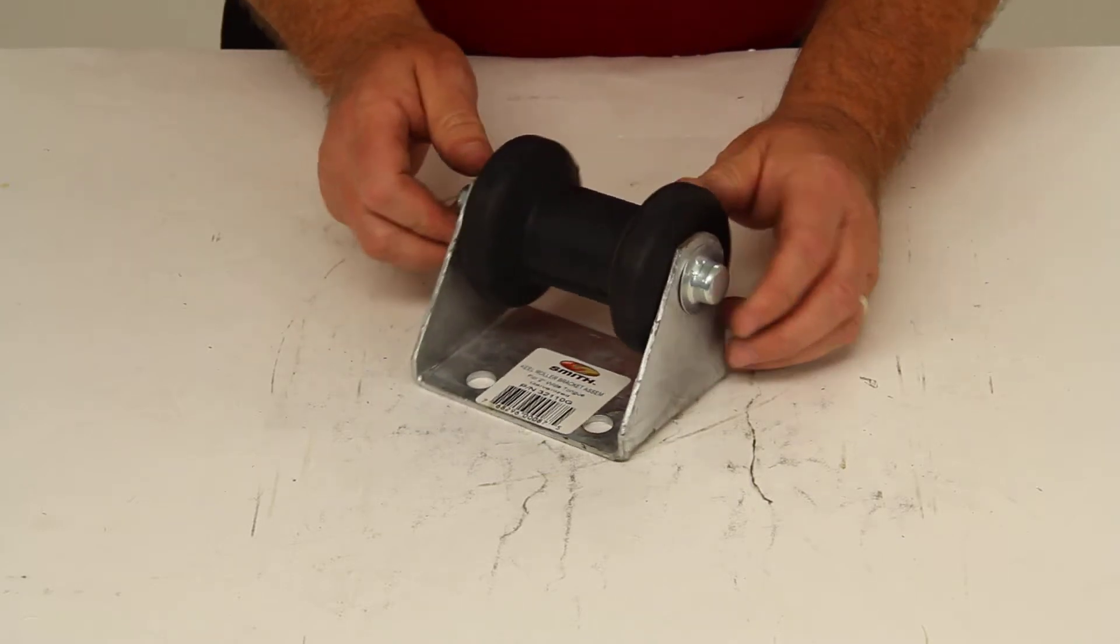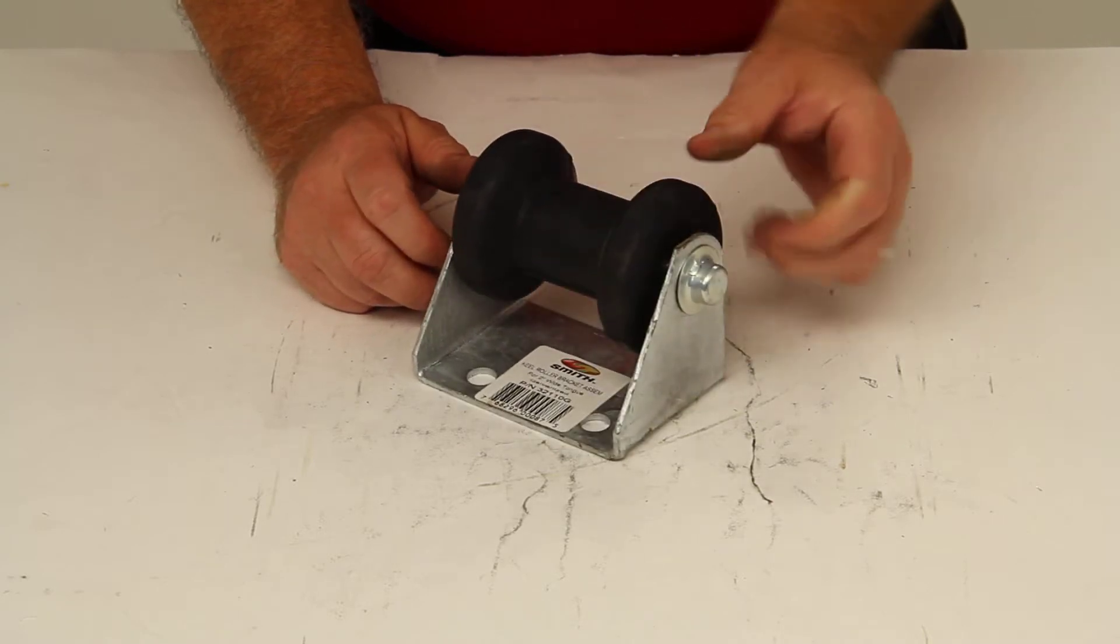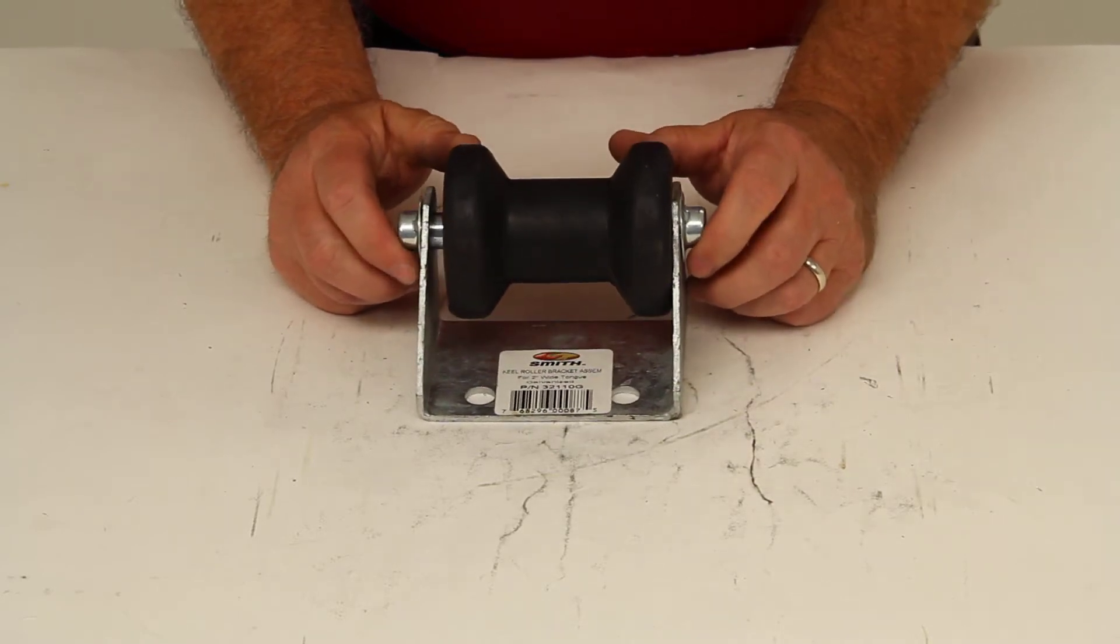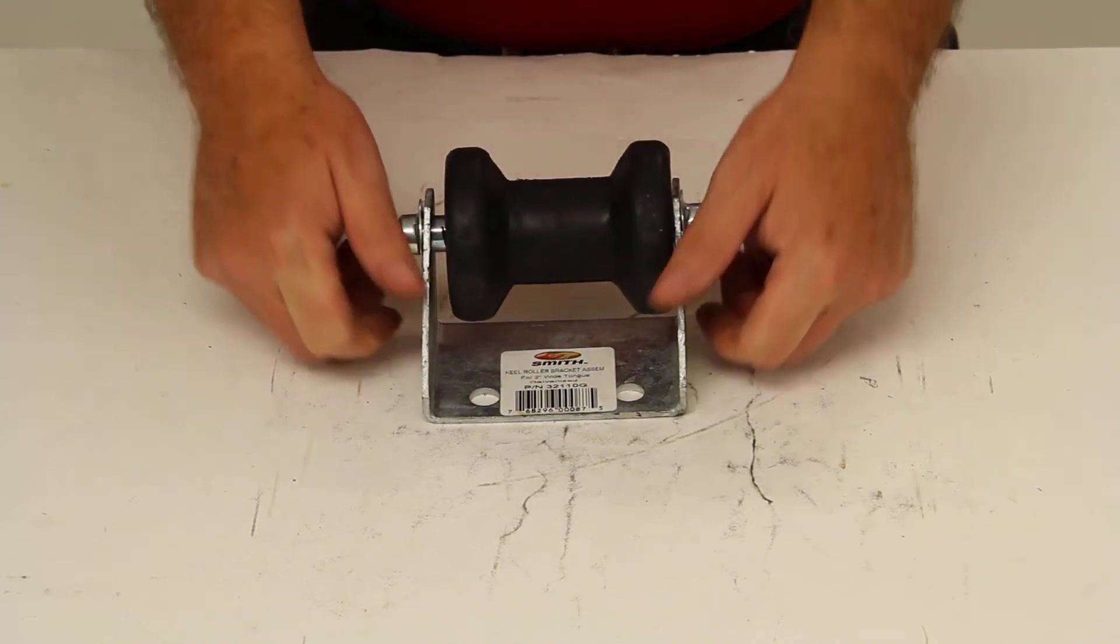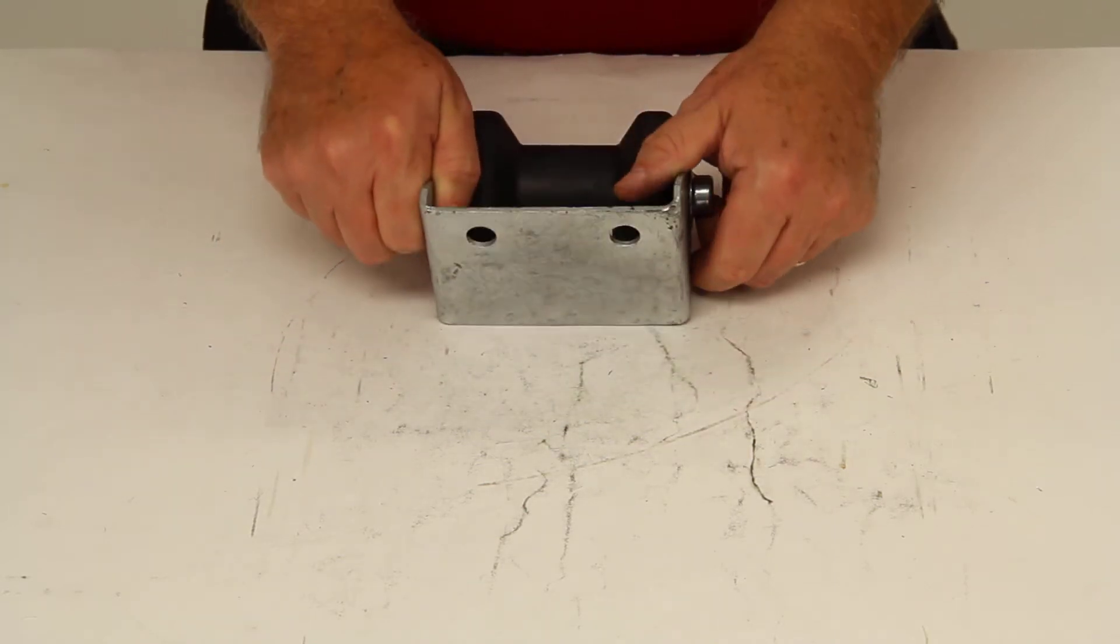This roller assembly helps support your boat's keel for easy loading and safe transport on your trailer. It features a 4-inch black rubber spool roller and a galvanized steel bracket that attaches to your trailer's tongue.